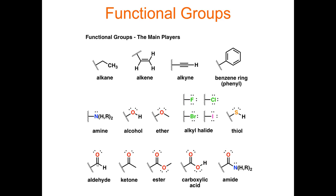For example, this group here — C double bond O — is called carbonyl. If there's an H on one side, we call that an aldehyde. If there's a carbonyl with a carbon on the other side, we call that a ketone. So sometimes these subtle differences make for big differences in the chemistry and reactivity of those functional groups. Because they react in different ways, we put them in different groups and give them different names.